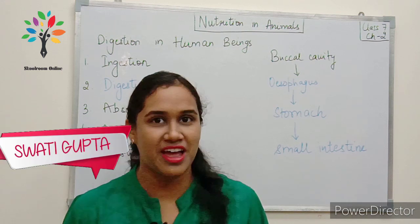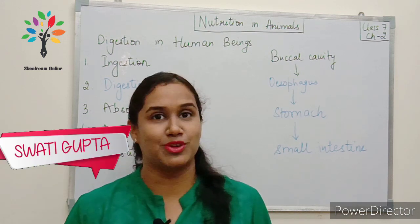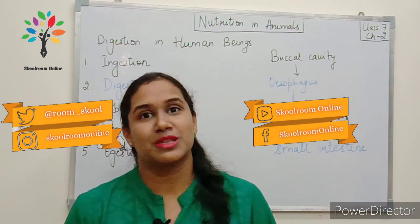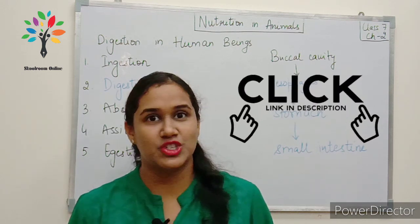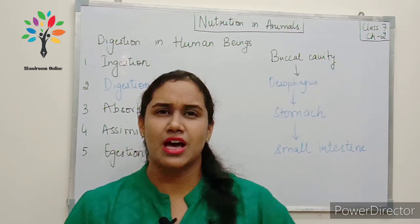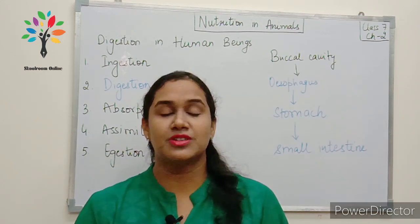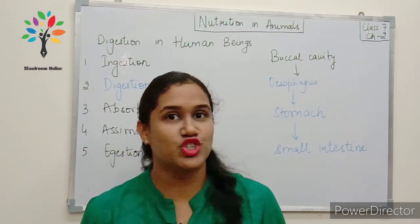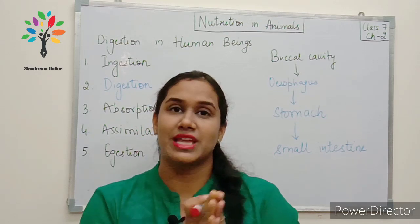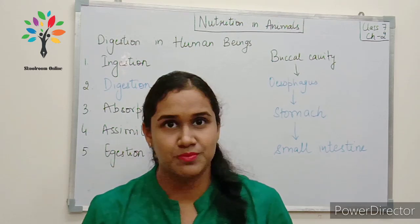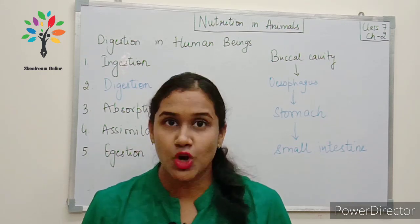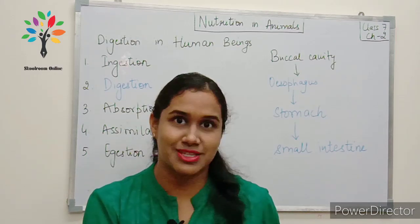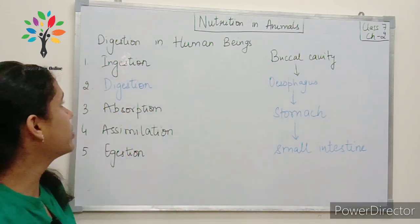Hi guys, I hope you all are doing fine. This is the second video for Chapter 2, Class 7 Science - Nutrition in Animals. The link to the last video can be seen in the description box. In the last video, we discussed the different modes of intake of food in different animals, and then we moved on to discuss digestion in human beings, where digestion is divided into five steps: ingestion, digestion, absorption, assimilation, and egestion.